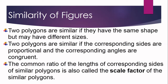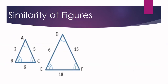You also have to remember that the common ratio of the lengths of the corresponding sides of similar polygons is called the scale factor of the similar polygons. Since corresponding sides of similar polygons are proportional, they have a common ratio, and that common ratio is what we call the scale factor. Let us determine whether triangle ABC is similar to triangle DEF.